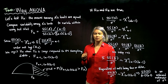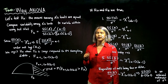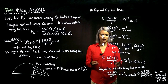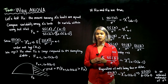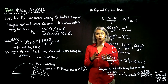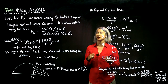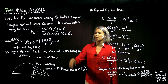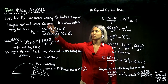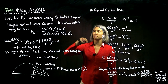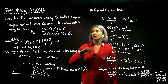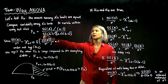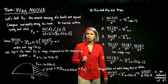We want to test whether the means among A's different levels are equal. Remember from one-way ANOVA, what we did is we compared the variability between groups to the variability within groups — that's exactly what we're going to do here again. We set up the test statistic the same way: variability between groups in the numerator and variability within groups in the denominator.